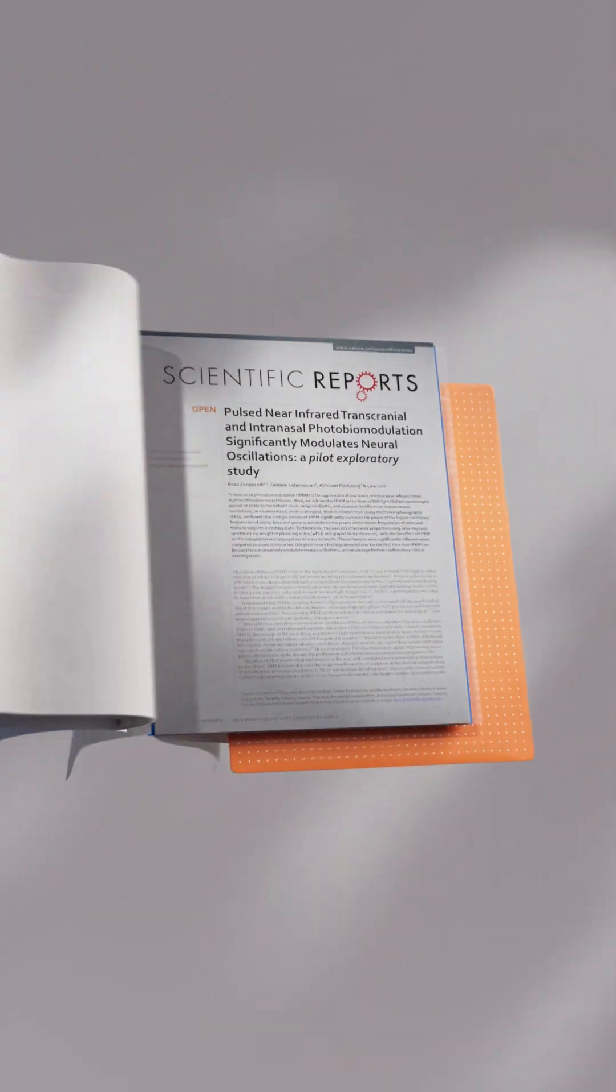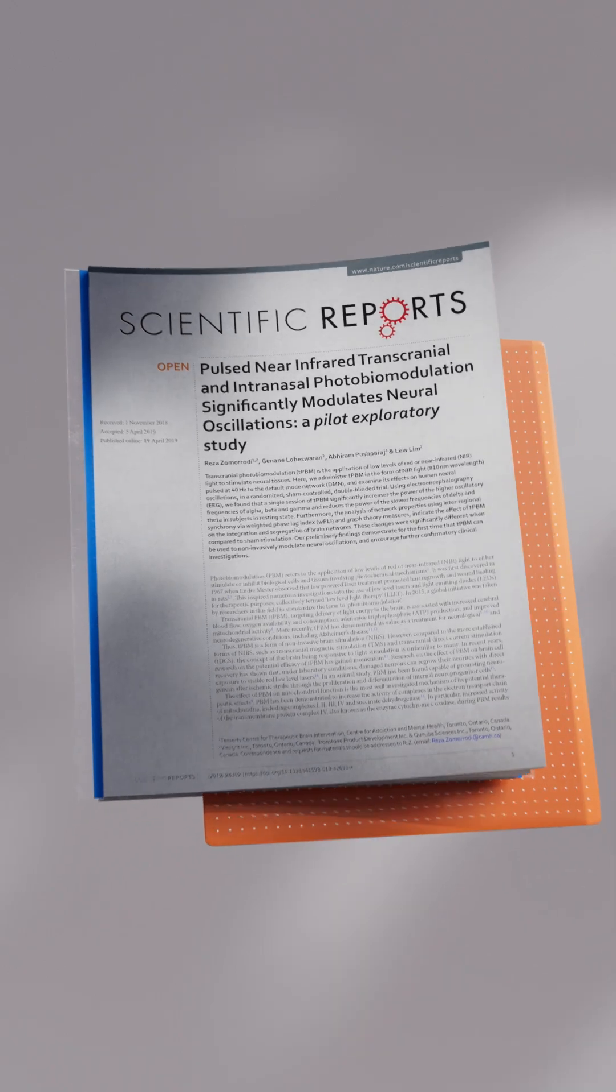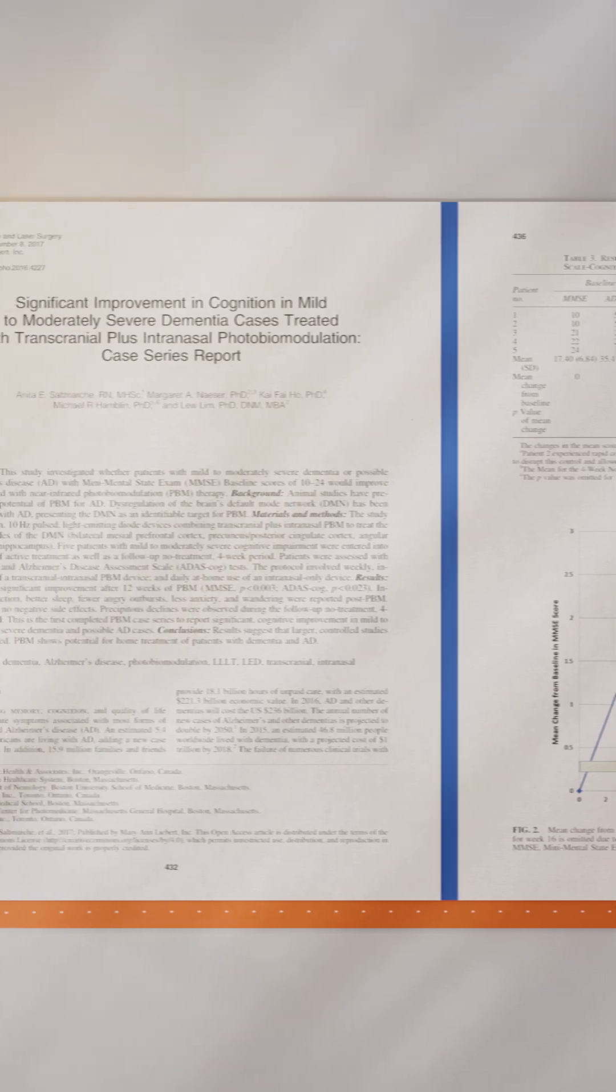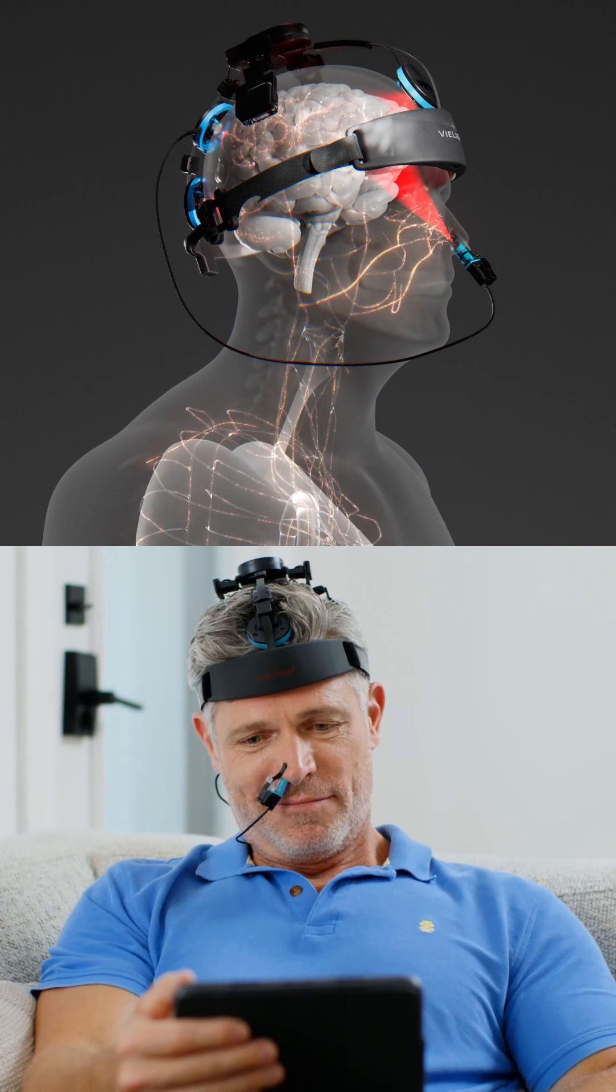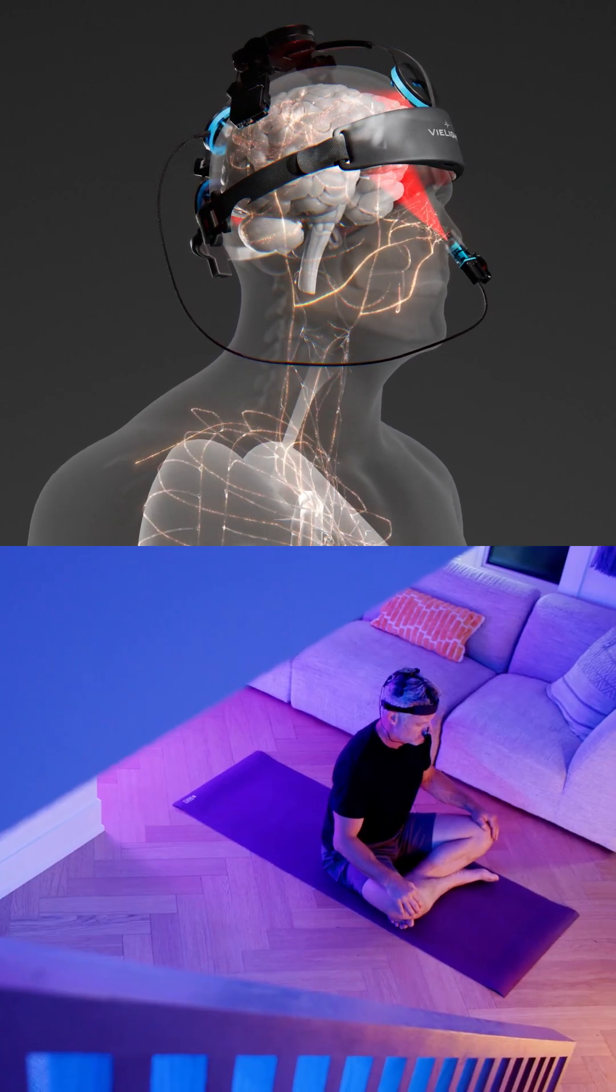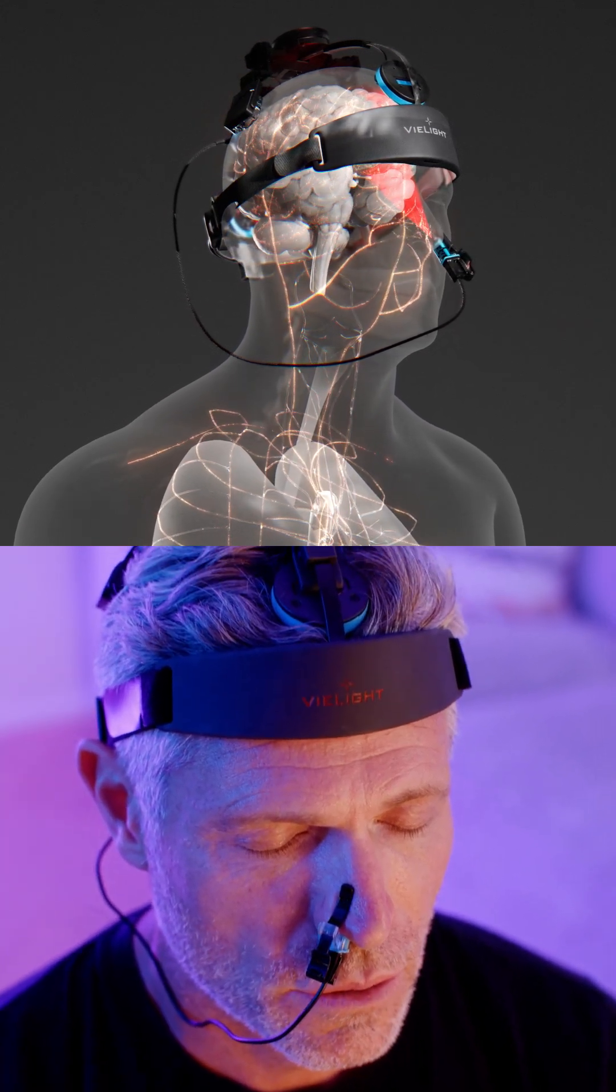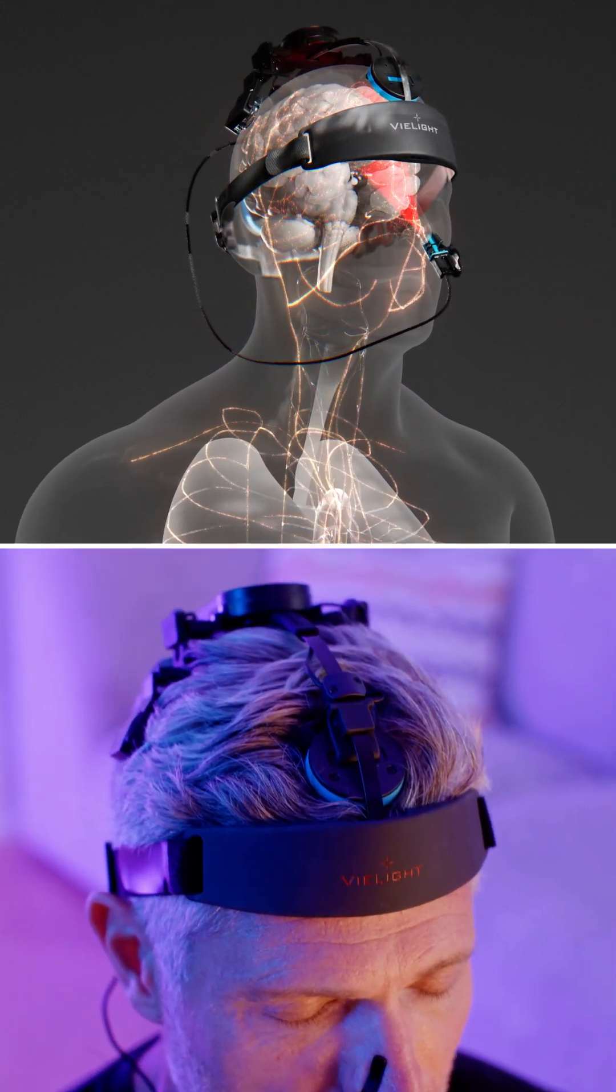V Light's patented approach is featured in the most published brain and systemic PBM studies, including a TBI study by the University of Utah and the first brain PBM paper in Nature. It also shows cognitive benefits in Alzheimer's trials using intranasal and transcranial PBM. To fully optimize your brain and body, intranasal PBM is a non-invasive, science-backed tool with global effects both in the brain and throughout the body.